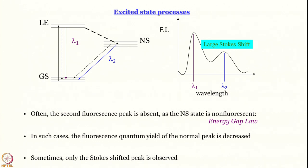Let us think about the different kinds of excited state processes that can take place. We are going to discuss one in a little bit of detail — the phenomenon of photoacidity and photobasicity — and then talk about three others: photoisomerization, photo-induced electron transfer, and intramolecular intersystem crossing.